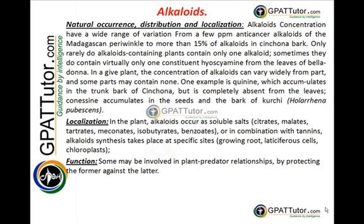Alkaloids also localize in the plant in the form of particular salts, usually citrates, malates, tartrates, meconates, isobutyrates, and benzoates. Sometimes they are present in combination with tannins. All alkaloid synthesis takes place at specific sites, usually growing roots, lactiferous cells, or chloroplasts. The classical example of salt presence is opium, which contains morphine in the form of morphine meconate.